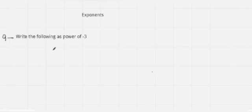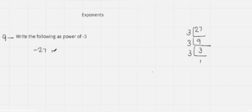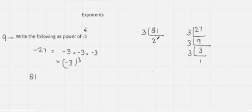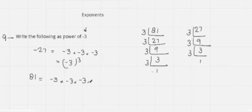Now we have another question: write the following as power of minus 3. I am taking first minus 27. I will do prime factorization of 27: 3 times 9 is 27, 3 times 3 is 9, 3 times 1 is 3. Since the base must be minus 3, I write minus 3 multiplied with minus 3 multiplied with minus 3, or minus 3 power 3. Now taking 81: prime factorization gives 3 four times. So with base minus 3, I write minus 3 multiplied with minus 3 multiplied with minus 3 multiplied with minus 3, or minus 3 power 4.